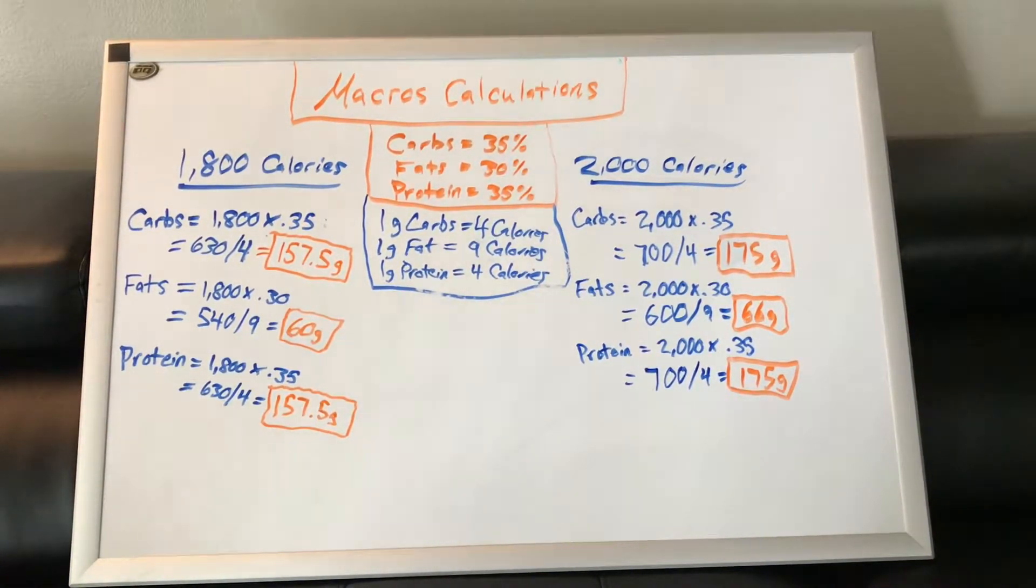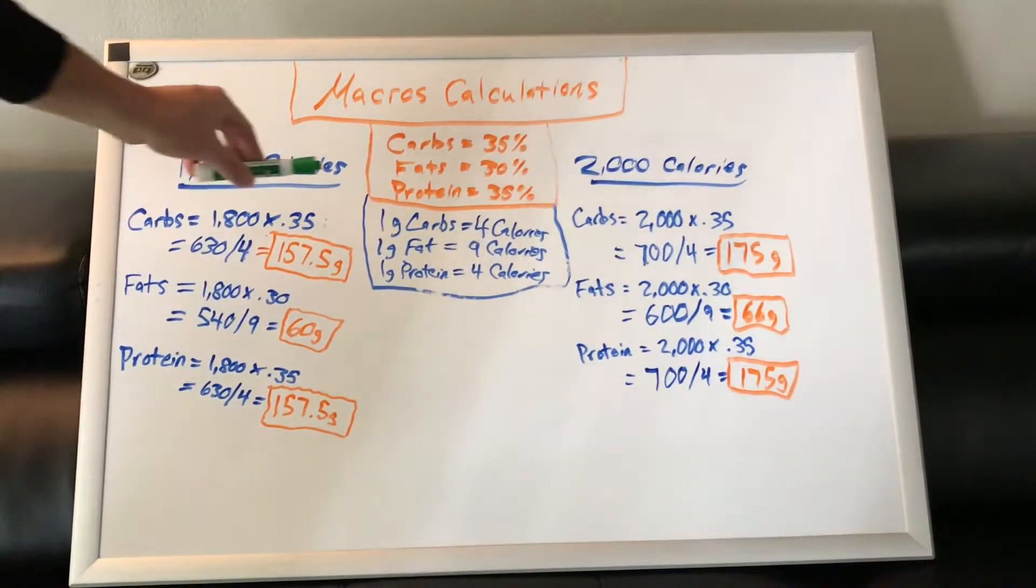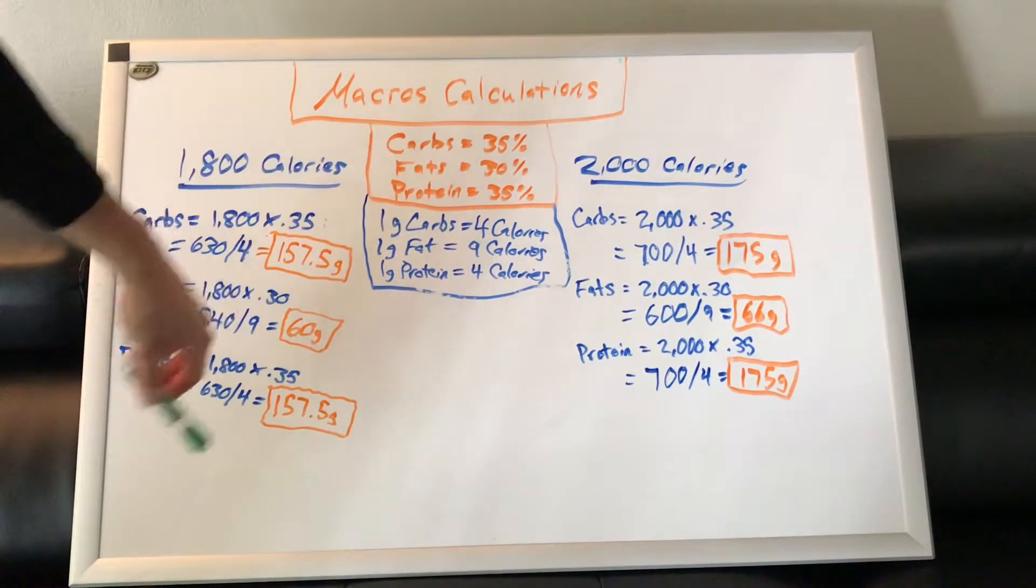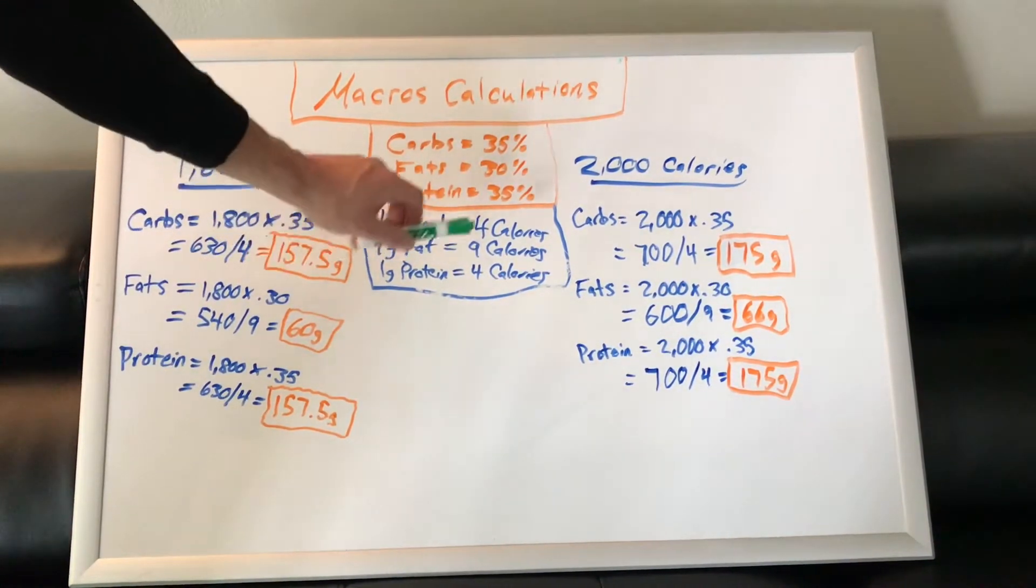Just to give you an idea here, a couple things that are very important to know. So this middle part, the blue section, one gram of carbs equals four calories, one gram of fat equals nine calories, one gram of protein equals four calories.